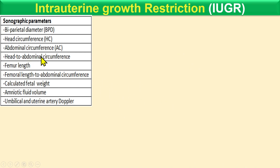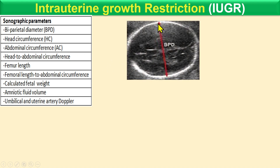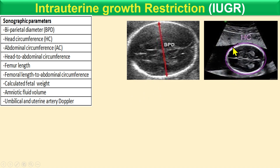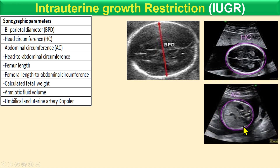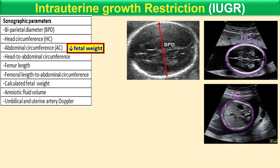The ultrasound parameters used include the biparietal diameter (BPD) — measured across the fetal head at the parietal level — as well as head circumference (HC) and abdominal circumference (AC). These measurements are compared to determine whether the IUGR is symmetrical or asymmetrical. In both symmetrical and asymmetrical IUGR, abdominal circumference is decreasing, which is the most suggestive finding for IUGR. Head circumference remains intact in asymmetrical IUGR.